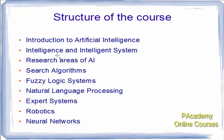Second is intelligence and intelligent systems — what constitutes the concept of intelligence and how intelligent systems are created from the concept of intelligence. Then there are the different research areas of the AI domain, and then we will go to search algorithms. Search algorithms enable the artificially intelligent system to search within the database to retrieve information.